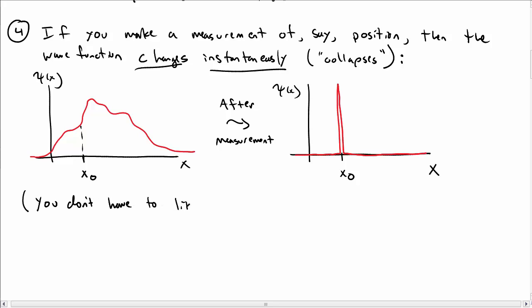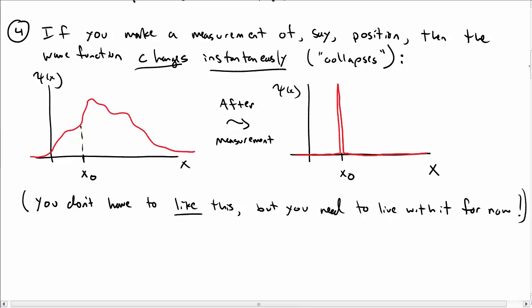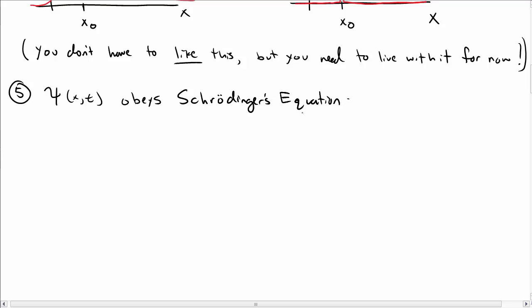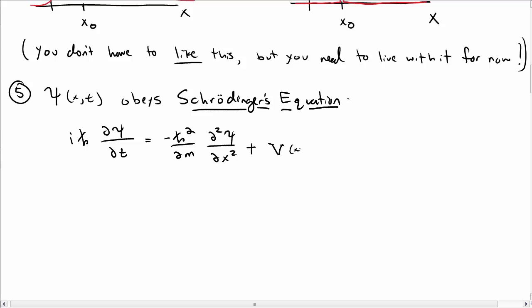You don't really have to like this at this point, but you do at least need to live with it — we can argue about it later. Postulate number five tells us that the wave function, looking at x and t, obeys the Schrödinger equation. This is the famous Schrödinger equation: i h-bar times the partial derivative of psi with respect to t equals minus h-bar squared over 2m times the second derivative of psi with respect to x, plus V of x times psi of x.